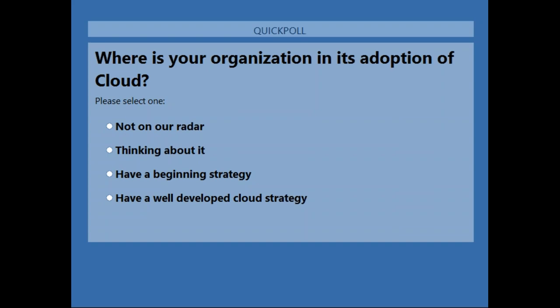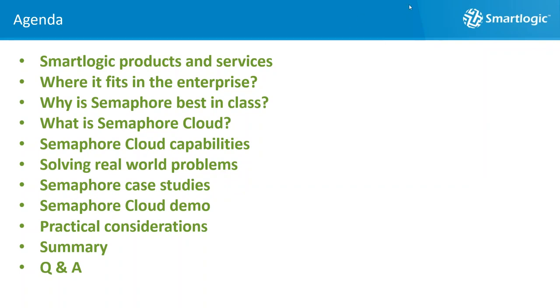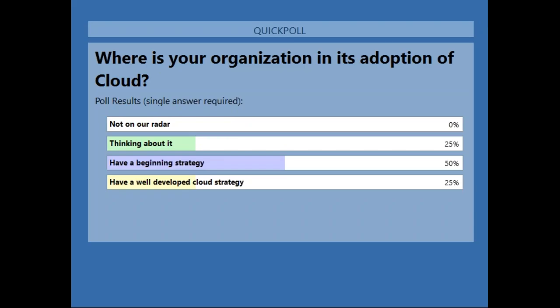With 67% of our audience voting, these are the results — pretty consistent with what we see in our customer base. 25% have a well-developed cloud strategy, 50% are beginning to develop a strategy, and 25% are still just thinking about it.